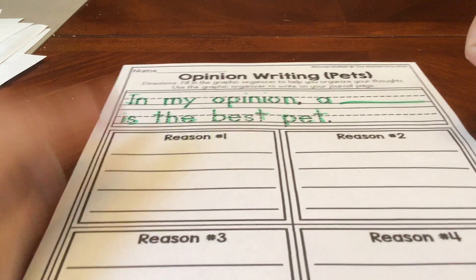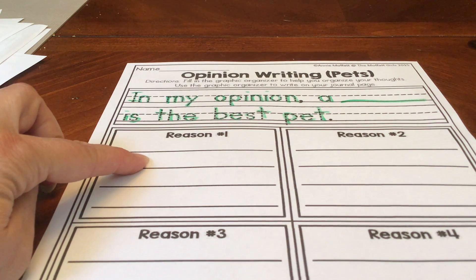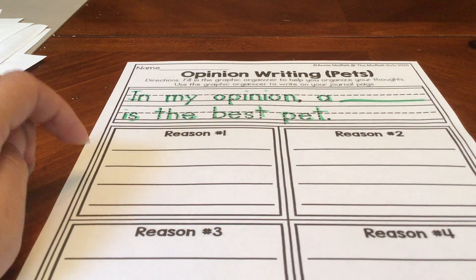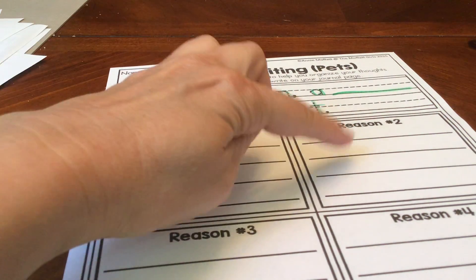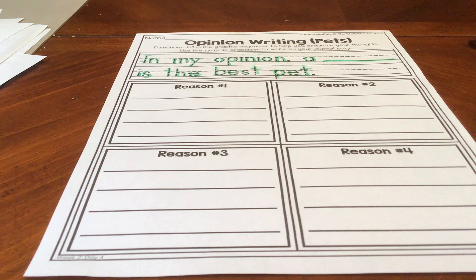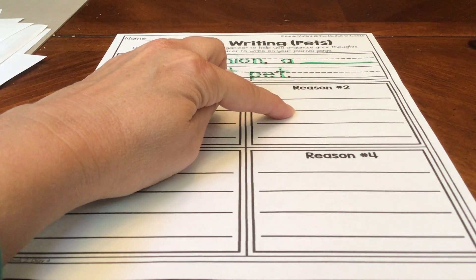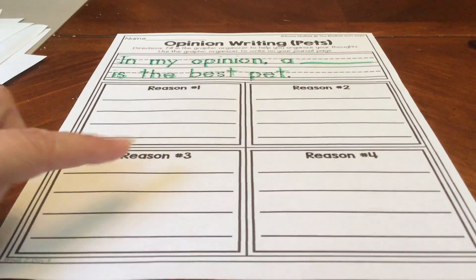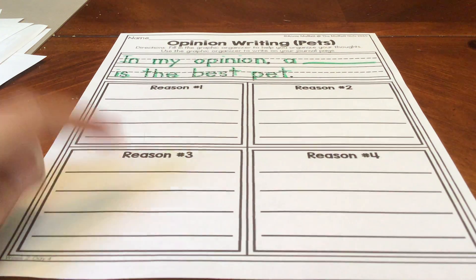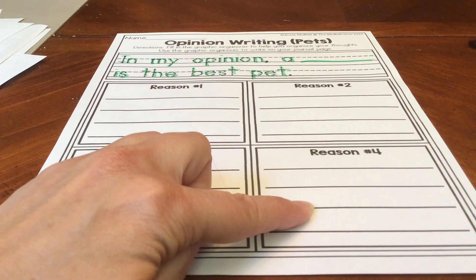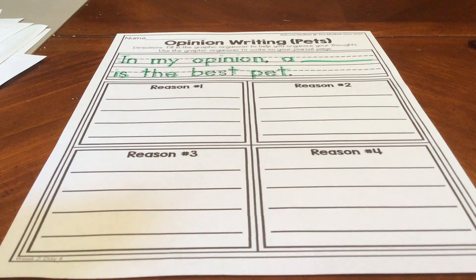If you wrote dog, why do you think a dog is the best pet? If you wrote a snake, why do you think a snake is the best pet? You've got to give me one, two, three, four reasons. So you could say, in my opinion, a dog is the best pet. Reason number one, because they are furry. Number two, because they play fetch. Number three, because they like to run. Number four, because I like to hear them bark.